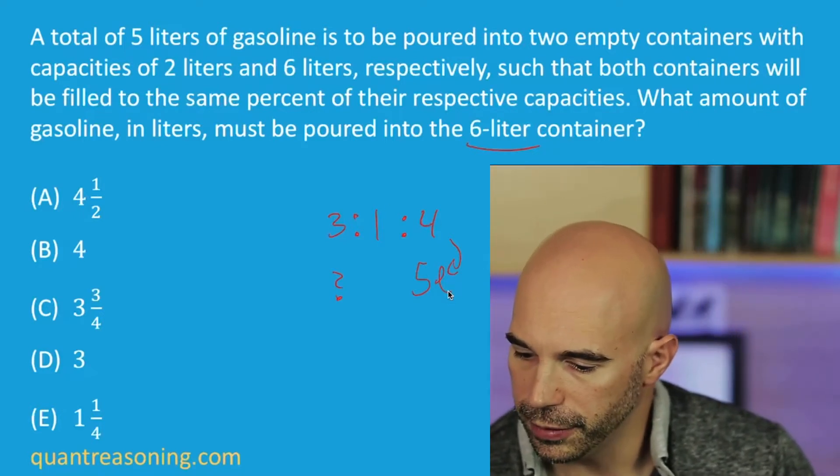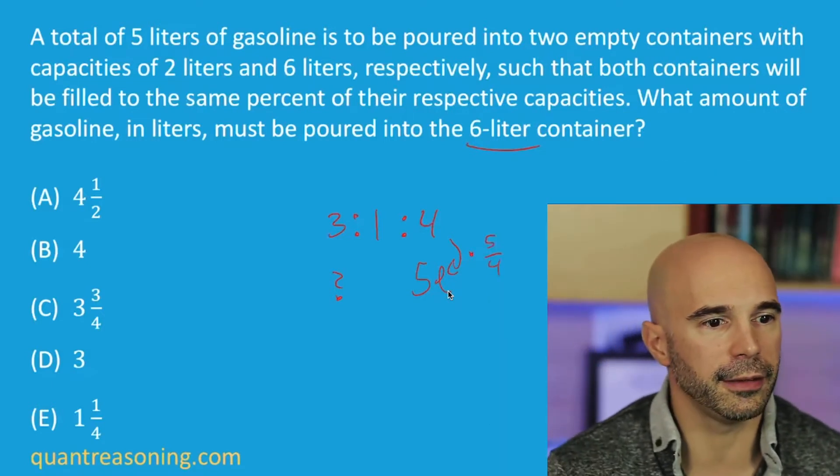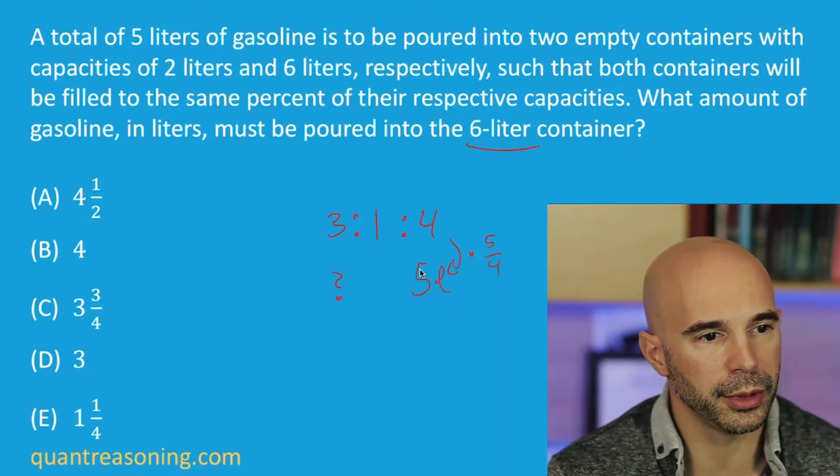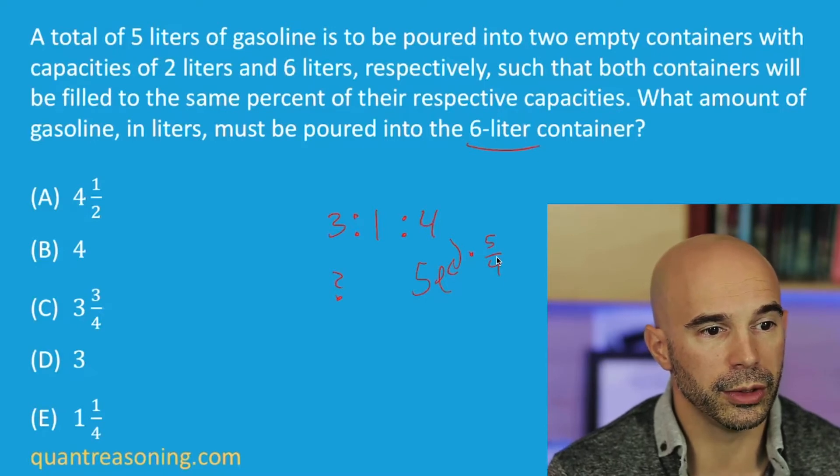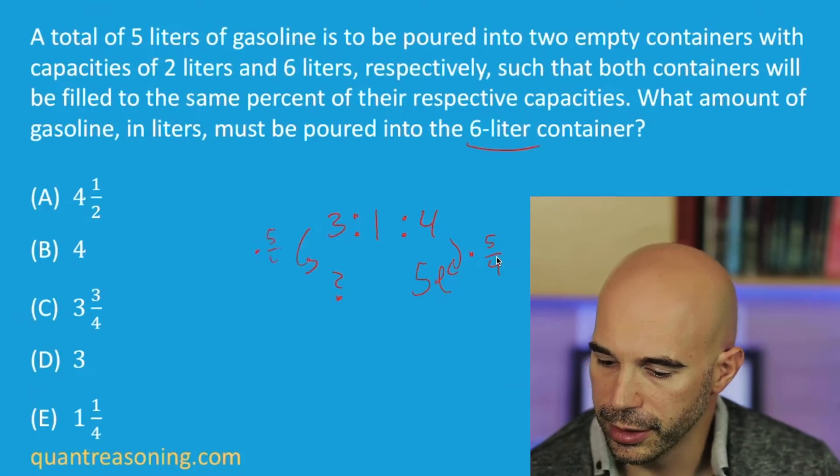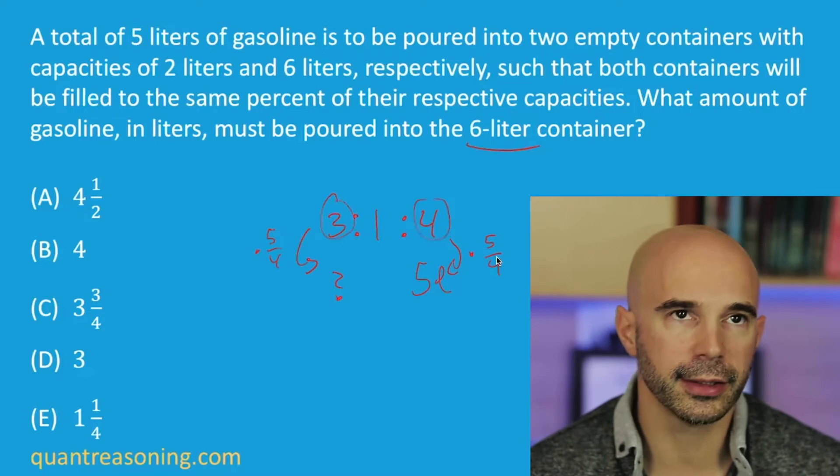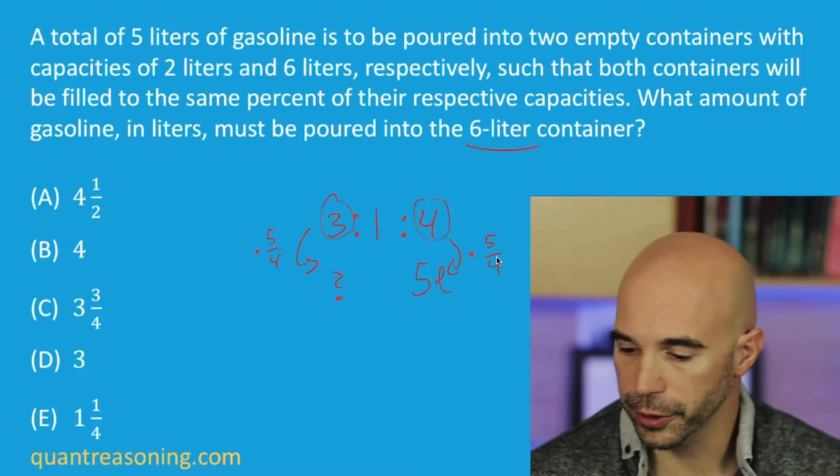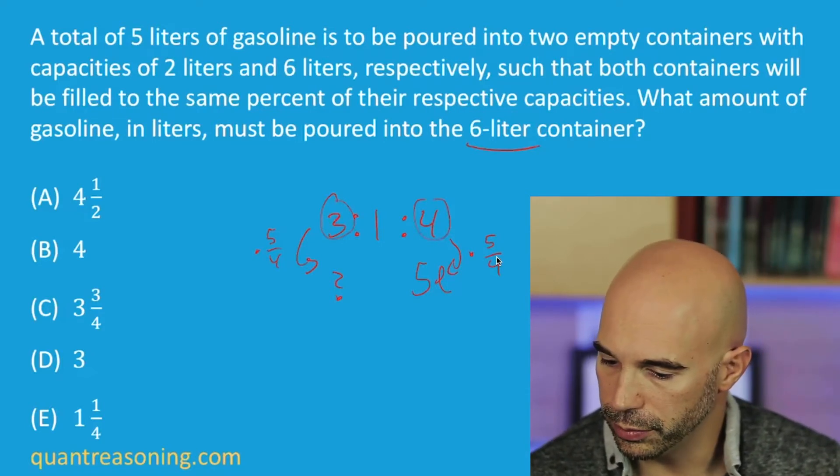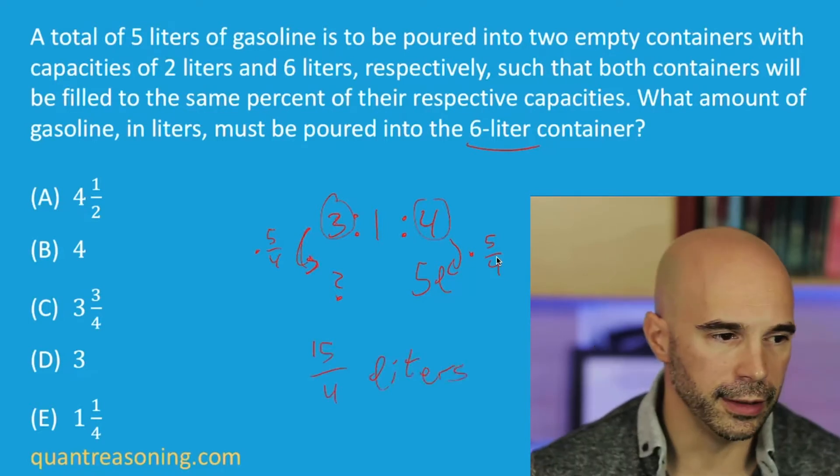Or if you prefer, you can infer the scale factor there of five-fourths. Getting the scale factor, you take the actual number divided by the number of ratio units that are presented and then apply that same scale factor here. So two different ways to finish this off. You either take three-fourths of five liters, so that would be 15-fourths, or you multiply the three times the scale factor and of course get the same answer, which is 15-fourths.